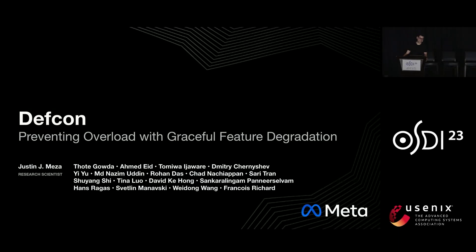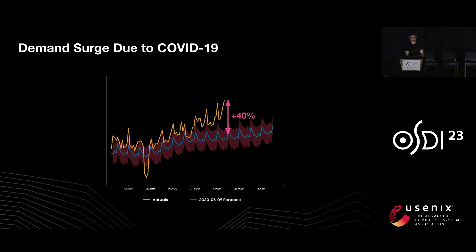I'm Justin. I'll try to speed through this talk to make up on lost time. That's an example of fail slow behavior, and fail slow behavior is challenging because it often leads to overload, which can happen in unexpected ways.